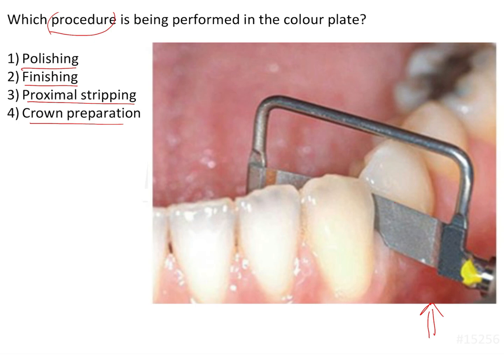What we see in this image is that there is a diamond strip or an abrasive strip that is held onto a saw frame which is engaging between the proximal surfaces of the lower anteriors. So this clinical procedure is proximal stripping.